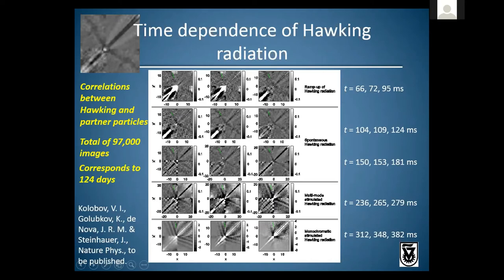Here are the results at 15 different times. In most of them you can see a band of correlations starting in the middle and going to the side — those are the correlations between the Hawking and partner particles. All of these correlation functions together represent a total of 97,000 repetitions of the experiment, corresponding to 124 days of continuous measurement.